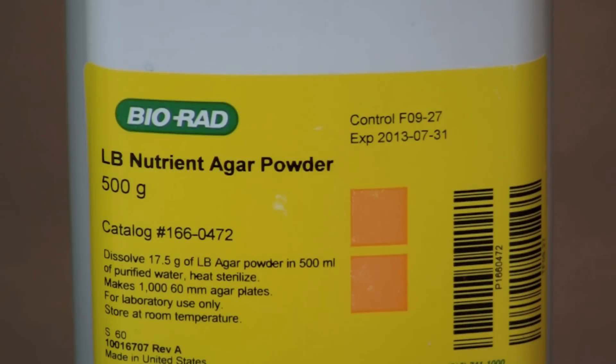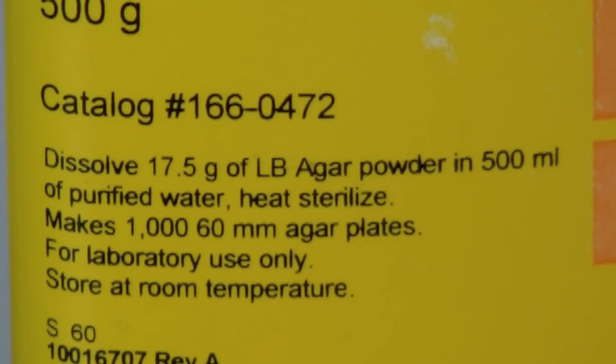For this activity we will be making 100 milliliters of microbiology media using LB nutrient agar powder. The recipe calls for dissolving 17.5 grams of LB agar powder in 500 milliliters of purified water to make 1,000 60-millimeter agar plates. This converts to using 3.5 grams of LB agar powder for the 100 milliliters of media we wish to prepare.